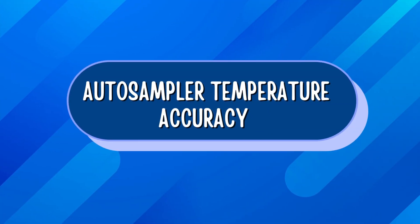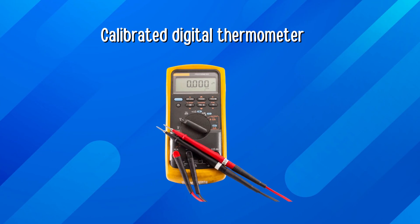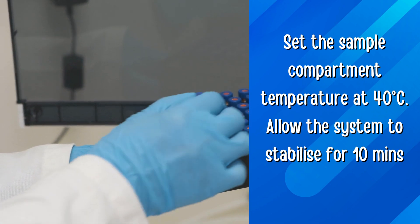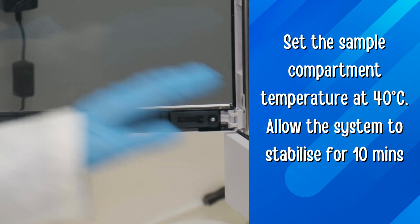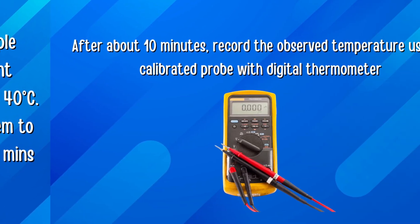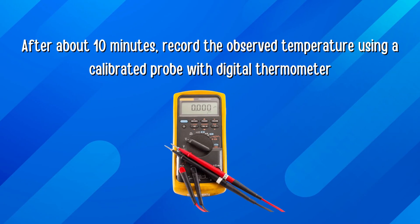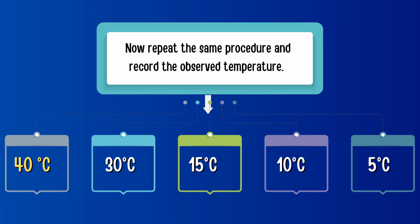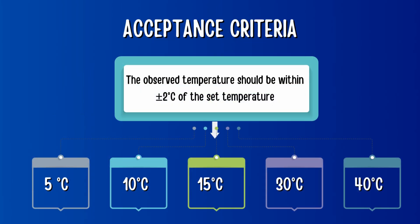Now in the fourth parameter, we will understand how to perform autosampler temperature accuracy. To perform autosampler temperature accuracy, we require a calibrated digital thermometer. Set the sample compartment temperature at 40°C and allow the system to stabilize for 10 minutes. After about 10 minutes, record the observed temperature using a calibrated probe with a digital thermometer. Repeat the same procedure at 30°C, 15°C, 10°C, and 5°C and record the observed temperature. The acceptance criteria is the observed temperature should be within ±2°C of the set temperature.